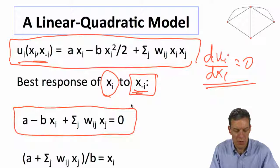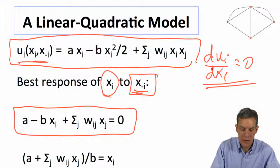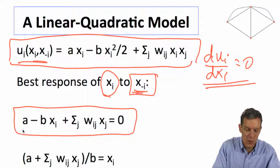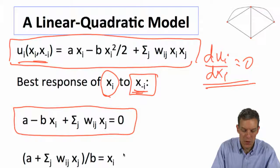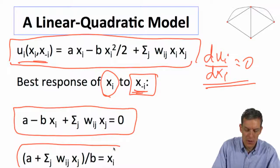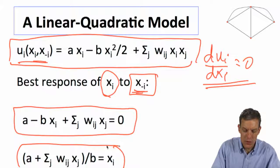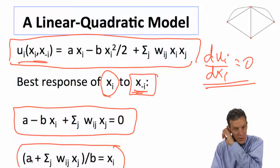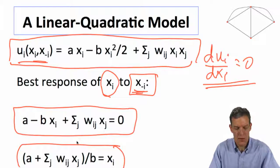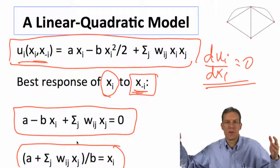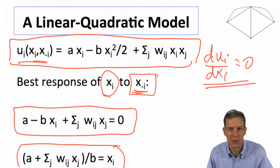taking the derivative, we get an a minus a b xi, right? So the 2 comes down, cancels the 2, and then sum of wij xj has to be equal to 0. So xi just has a nice form where what you're doing is you're weighting things by a over b, and you have something which is positively responsive to the amount of activity that your neighbors take.